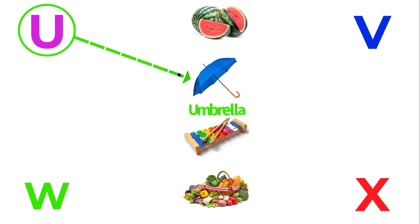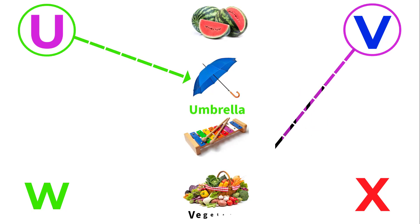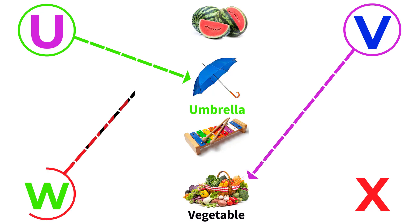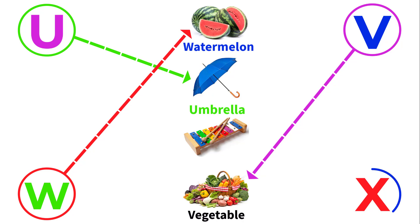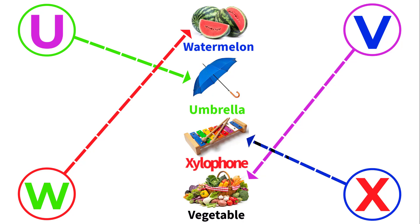U for umbrella, V for vegetable, W for watermelon, X for xylophone.